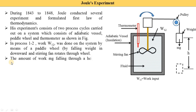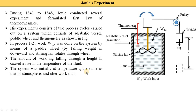The amount of work Mg falling through a height causes a rise in temperature of the fluid. When the fan rotates inside the fluid, the temperature of the fluid increases. The system was initially at temperature T1, the same as that of the atmosphere. After the work transfer — when the fan is rotated — the temperature rises to T2 at constant pressure of one atmosphere, meaning the pressure of the fluid remains constant.